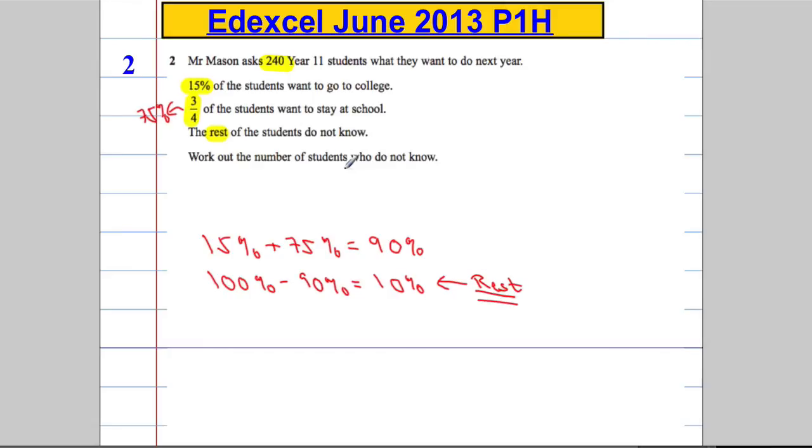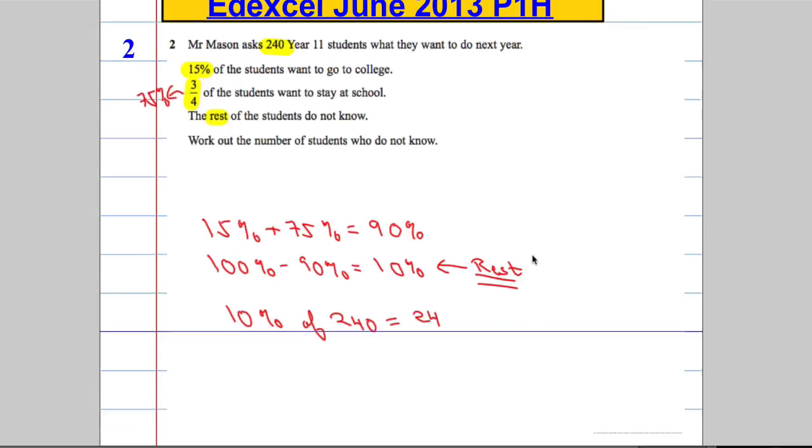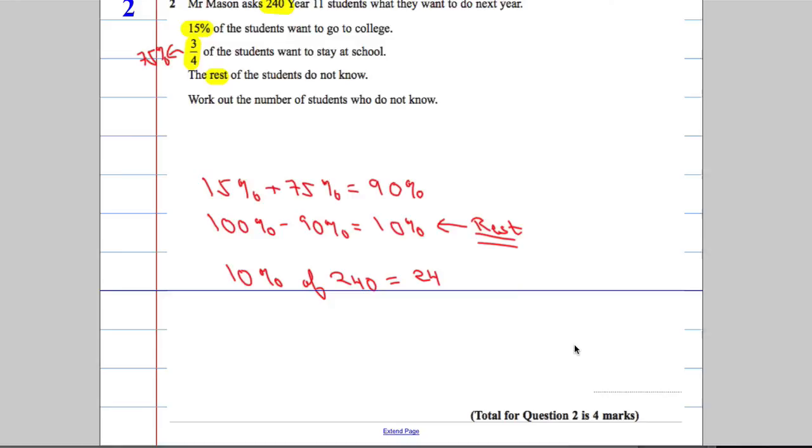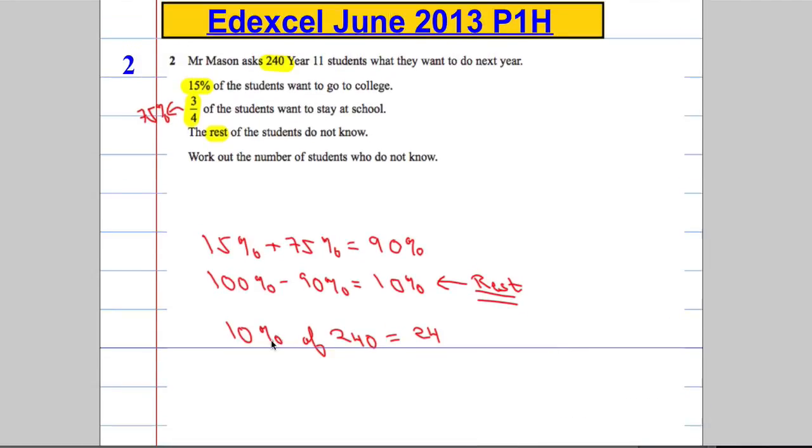So we're asked to work out the number of students who do not know. I need to work out 10% of 240 and that's going to equal 24. So fairly straightforward there guys. For four marks, you literally had to work out 10% of 240.